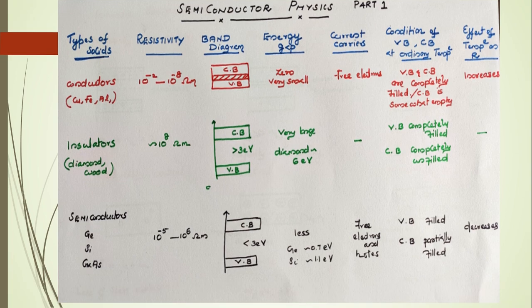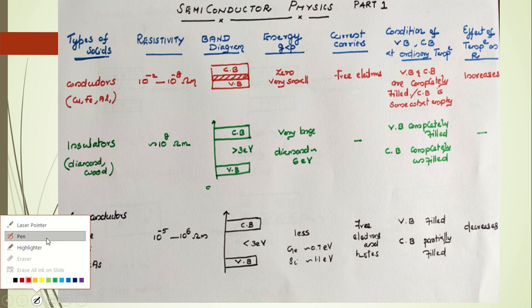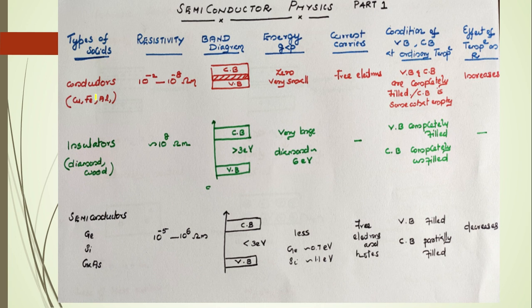First of all, solids are divided into conductors, insulators, and semiconductors. Examples of conductors include iron and aluminum. Insulators include wood, plastic, and diamond. Semiconductors include germanium, silicon, gallium arsenide, etc.